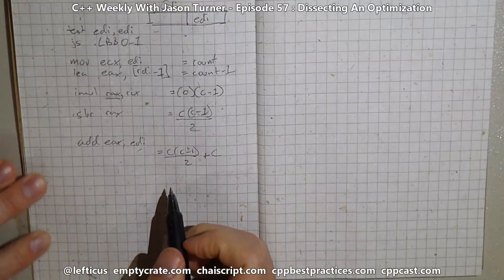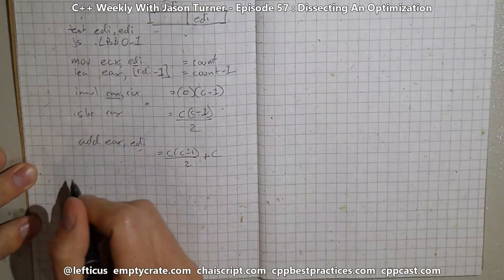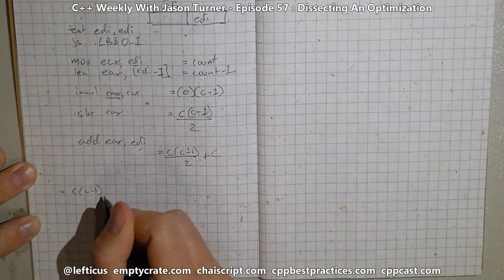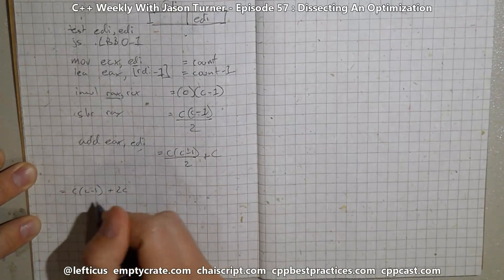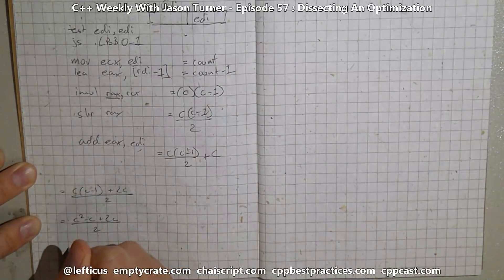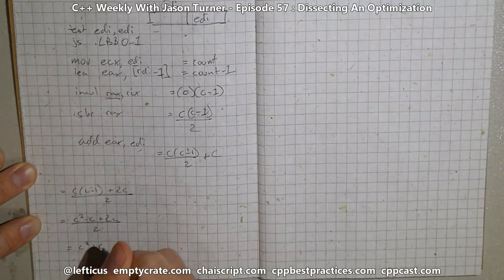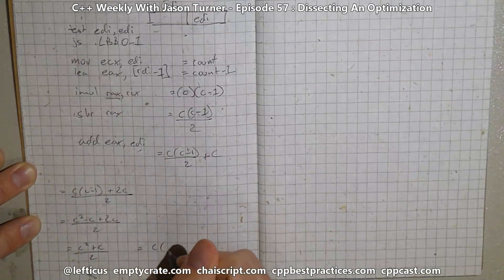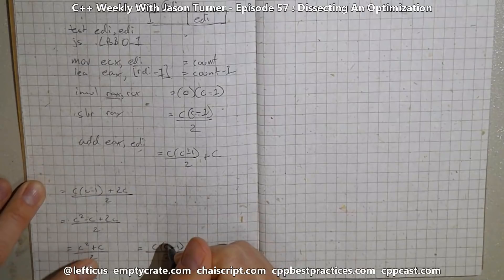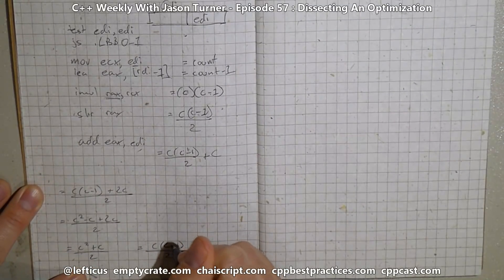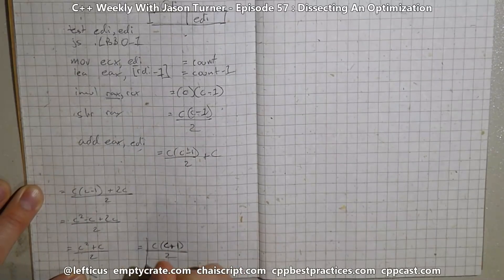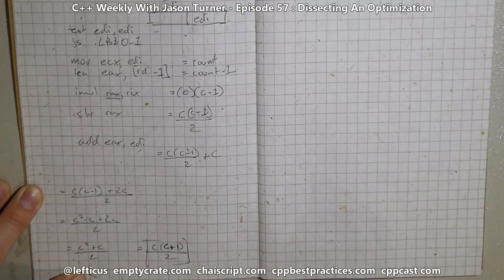And we're going to have to do a little bit of algebra, but not very much. So we end up with C times C plus one divided by two. This is our final result here.